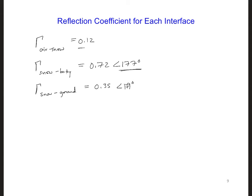So in other words, we can expect about 12% of the wave to reflect from the air-snow interface, 72% from the snow-body interface, and 35% from the snow-ground interface.